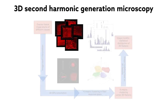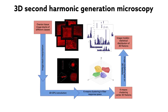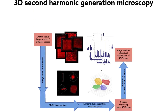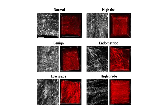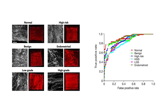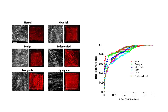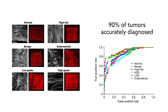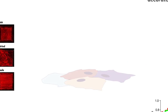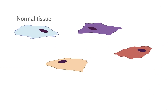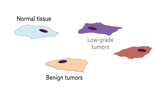They then wrote an algorithm that could perform texture analysis of that data. Because these images created a more complete picture to begin with, this approach improved the accuracy of cancer staging by up to 8%, allowing about 90% of tumors to be accurately diagnosed. Using the algorithm, the scientists trained computers to separate normal tissue from benign tumors, low-grade tumors, and high-grade tumors.